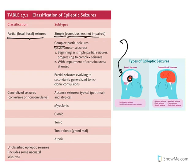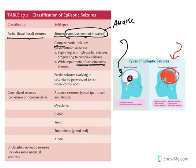In simple seizures, consciousness is not impaired — the subject is awake. Whereas in complex seizures, impairment of consciousness occurs. In generalized seizures, the whole brain is involved — both hemispheres are involved. So the major types are partial seizures and generalized seizures.